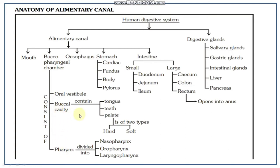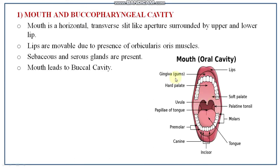The buccopharyngeal chamber consists of three parts: oral vestibule, buccal cavity, and pharynx. The buccal cavity contains tongue, teeth, and palate; palate is of two types — hard and soft. Pharynx is divided into three parts: nasopharynx, oropharynx, and laryngopharynx. Stomach has four parts: cardiac, fundus, body, and pylorus. Intestine is of two types — small and large. Small intestine consists of duodenum, jejunum, and ileum; large intestine consists of cecum, colon, and rectum, which opens into the anal canal. The digestive glands are salivary, gastric, intestinal, liver, and pancreas.